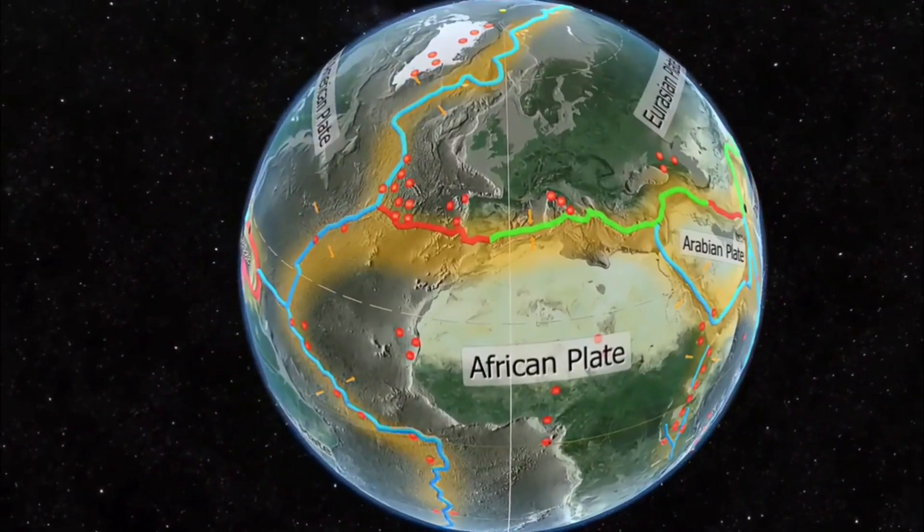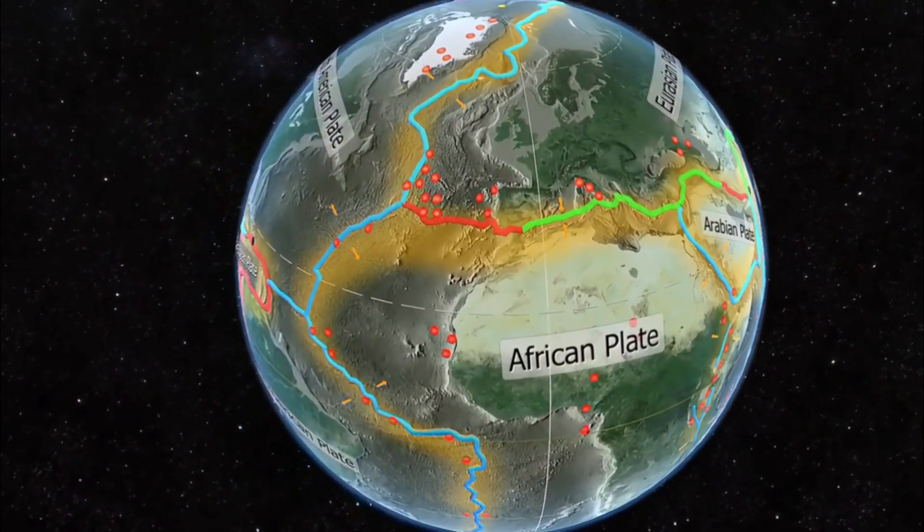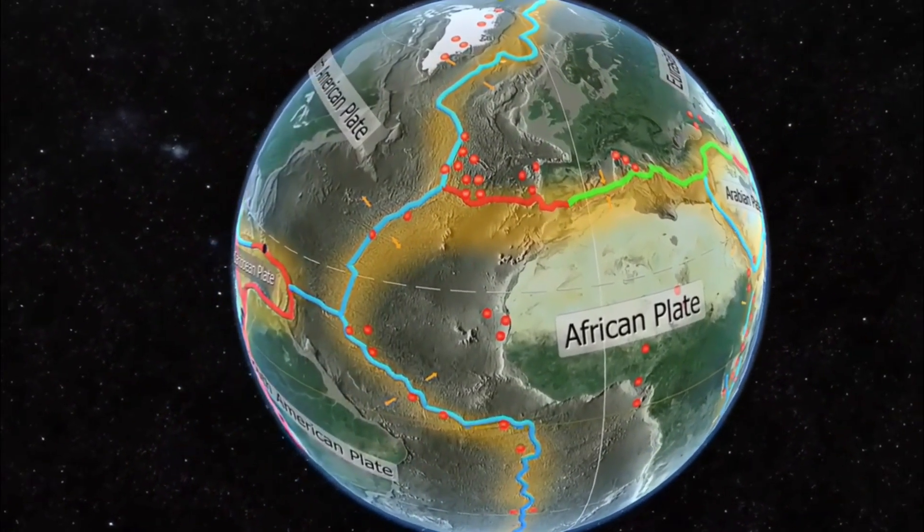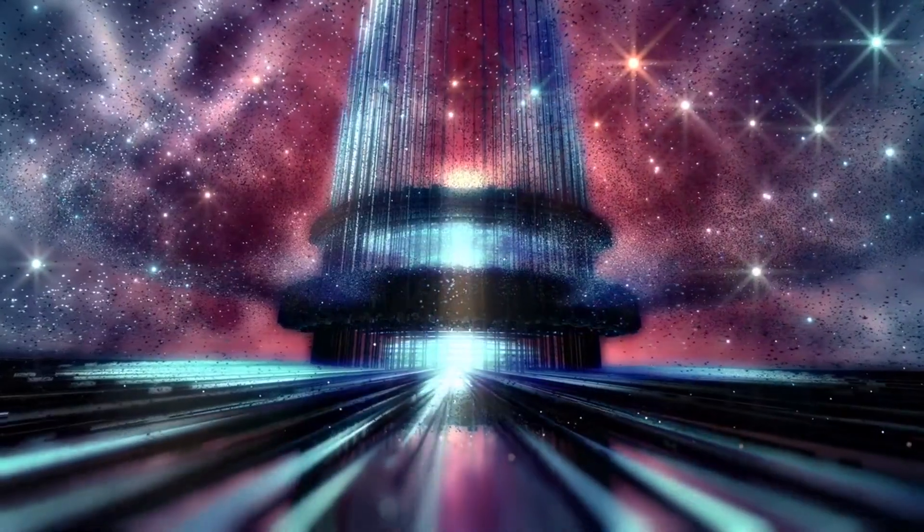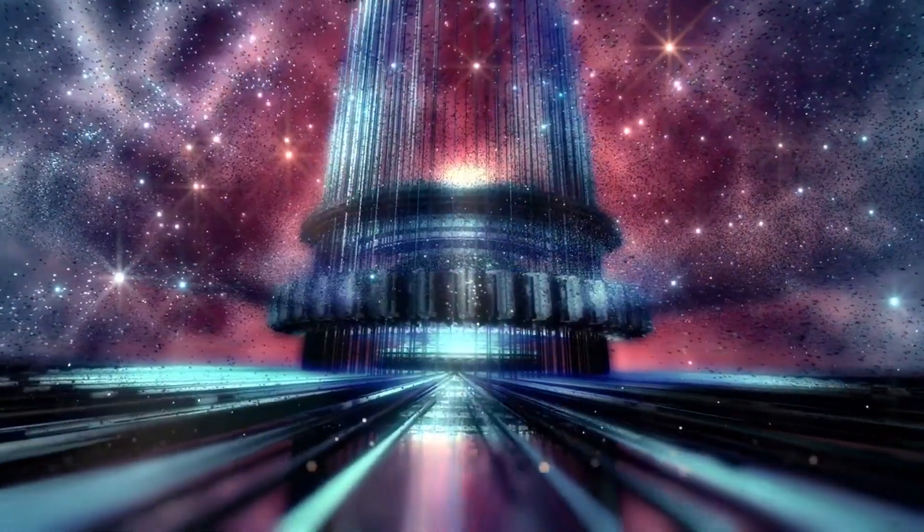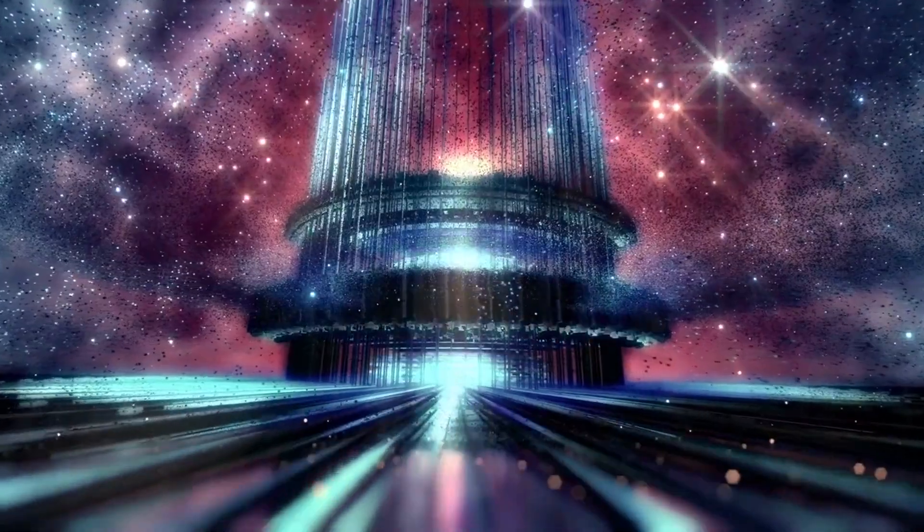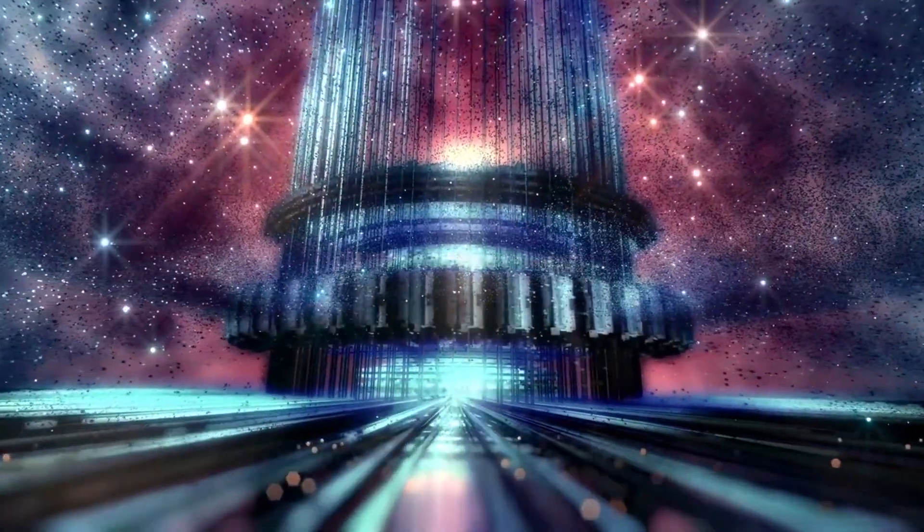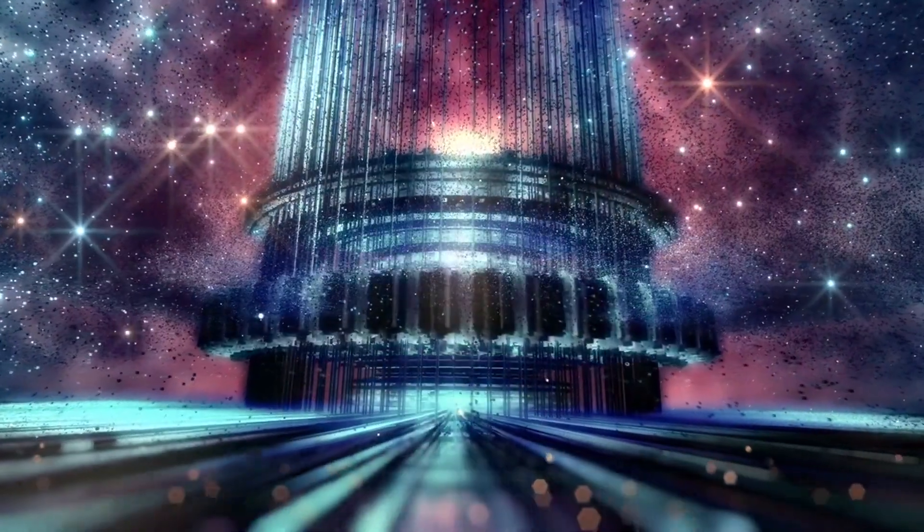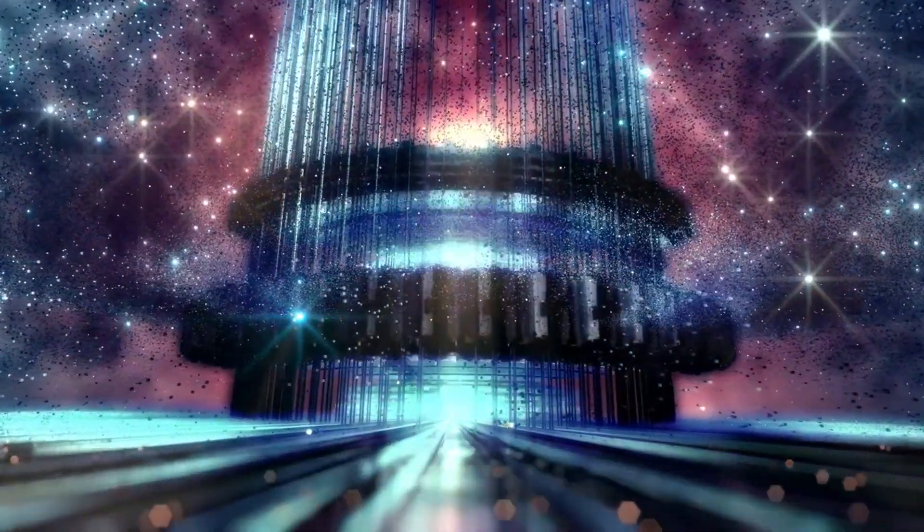The clash resembled tectonic plates grinding against each other, not chaotic but patterned. This turbulence suggested something extraordinary: that our galaxy might possess a magnetic skeleton, vast invisible filaments of force that shape the movement of matter, radiation, and cosmic rays. Voyager crossed one of these thresholds, where high-energy particles suddenly surged, accelerated by distant black holes and supernovae.